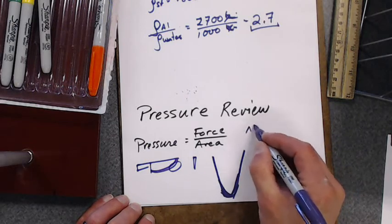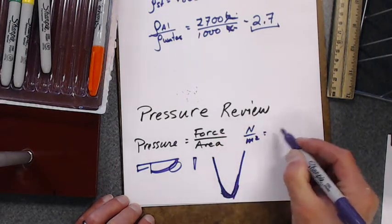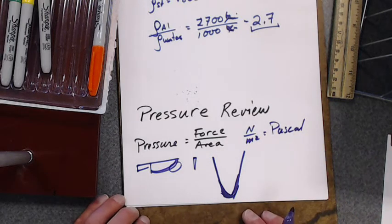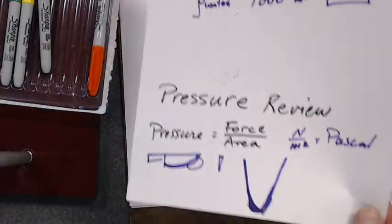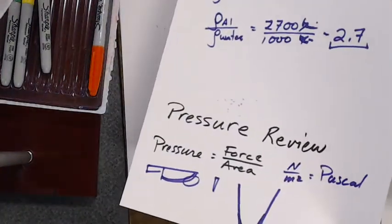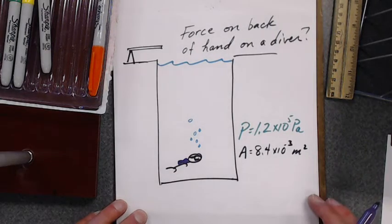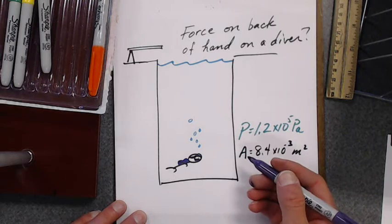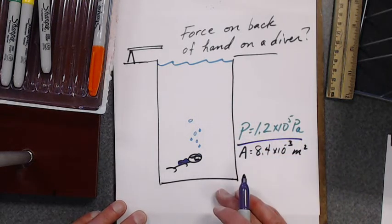How do we measure pressure? It's newtons per square meter, because that's what force over area is. However, we named it after Pascal — he had a pretty cool triangle. Now let's play with this. Let's say you're in a giant dive pool, swimming at the bottom, and the pressure on you is 1.2 times 10 to the fifth pascals.